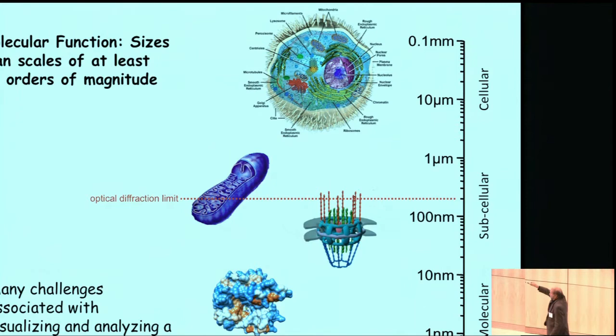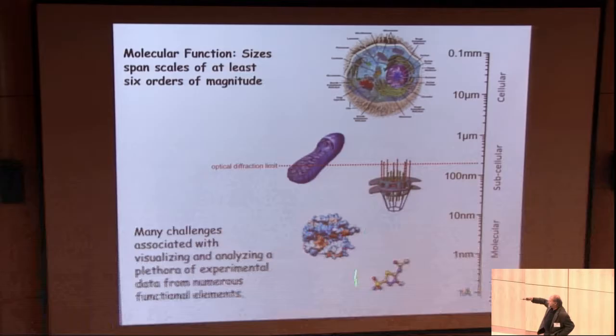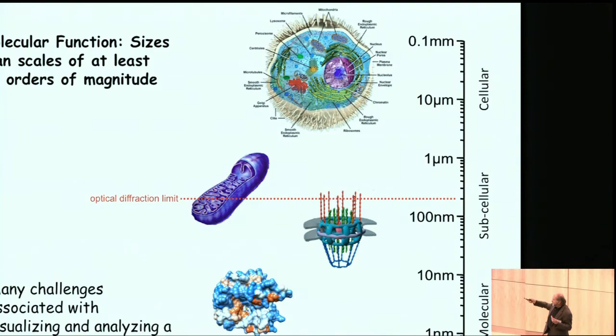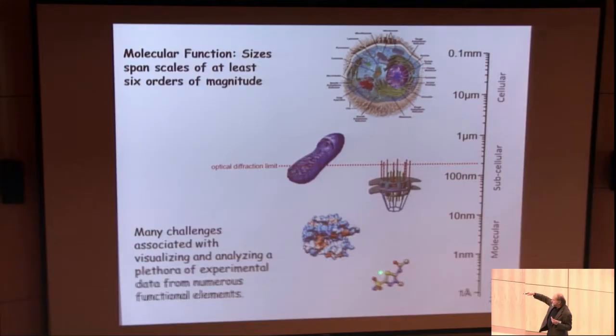There's a number of different challenges at the experimental level for obtaining data across all these six orders of magnitude, and then analyzing that data and representing it in some form that allows our knowledge and use of the models to change with these different scales.